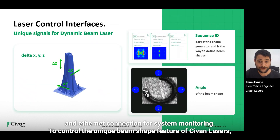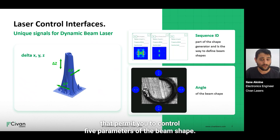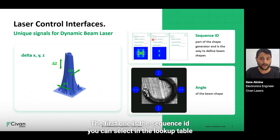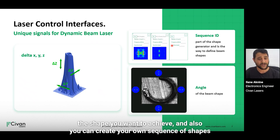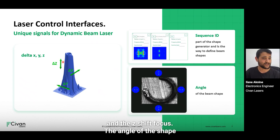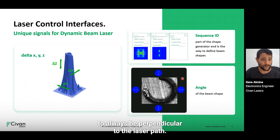To control the unique beam shape feature of Sivan laser — which is exclusively a Sivan feature — you can control five parameters of the beam shape. The first is the sequence ID: you can select in the lookup table the shape you want to achieve, and also create your own sequence of shapes. You can control the X-axis offset, the Y-axis offset, and the Z shift focus. You can also control the angle of the shape, which allows you to always be perpendicular to the laser path.